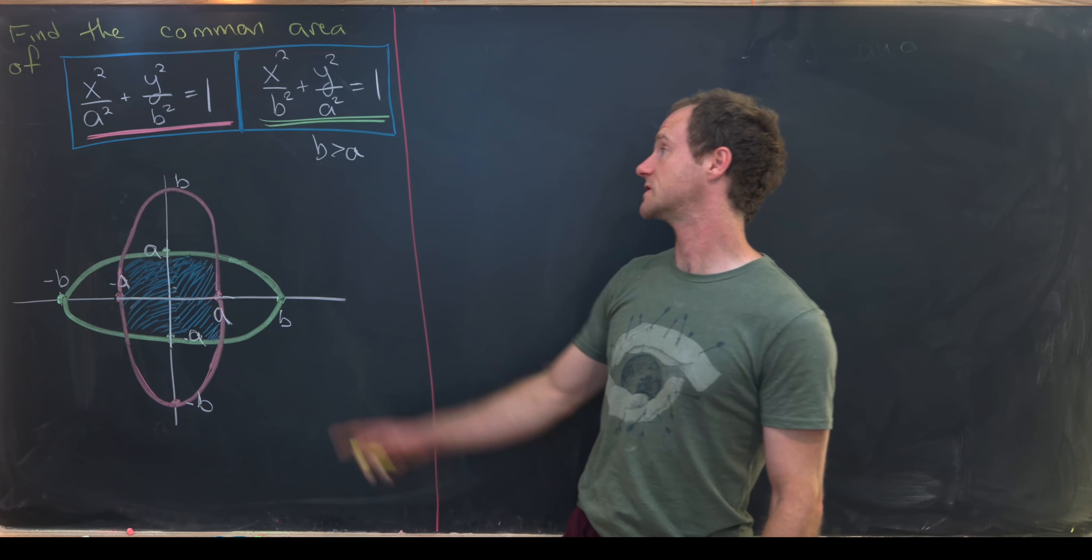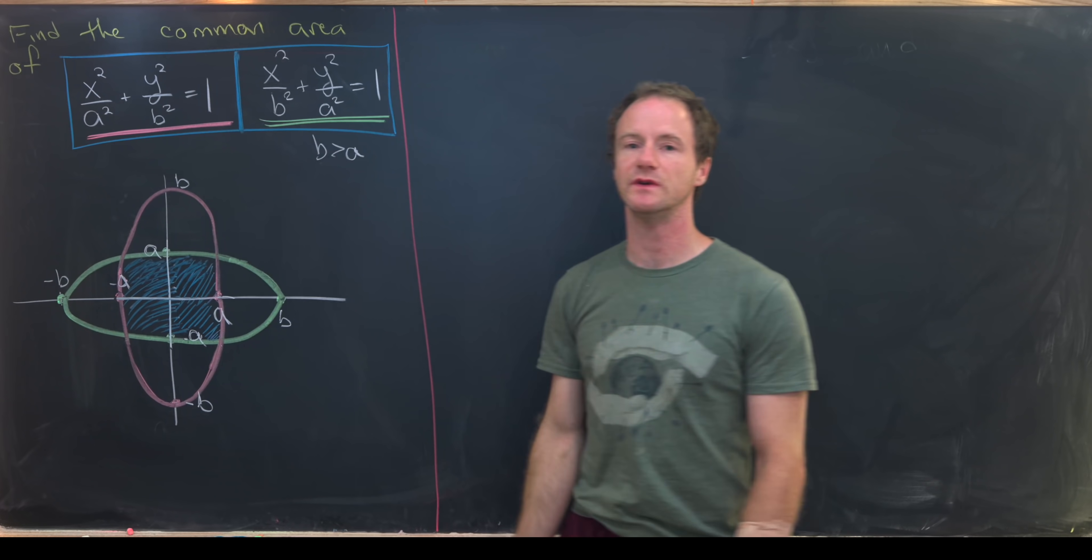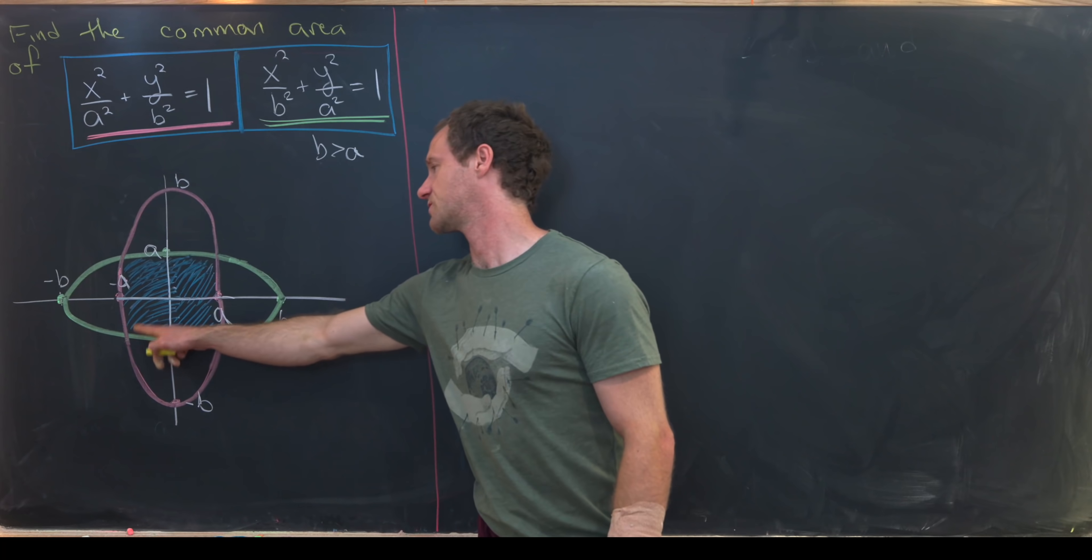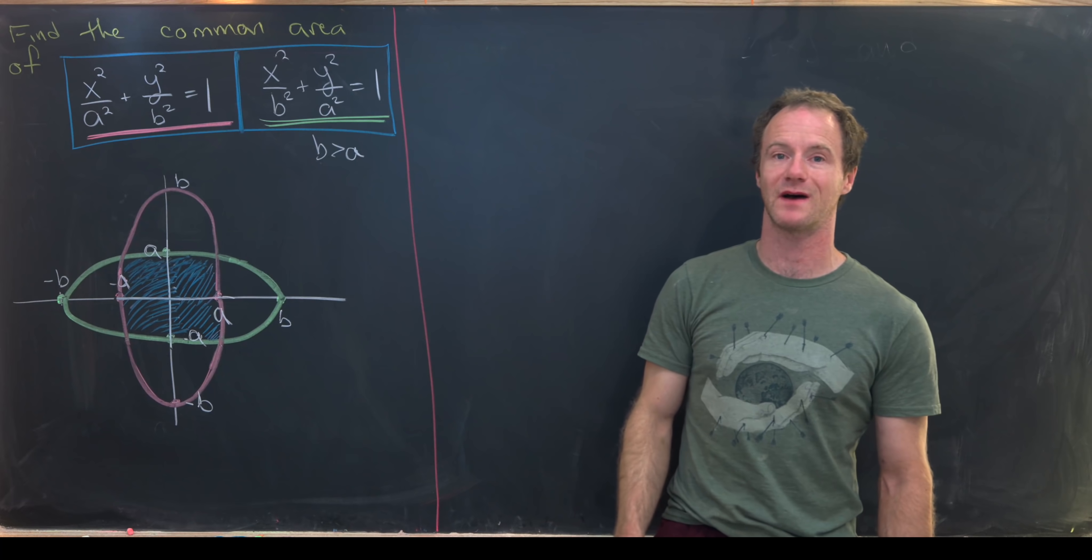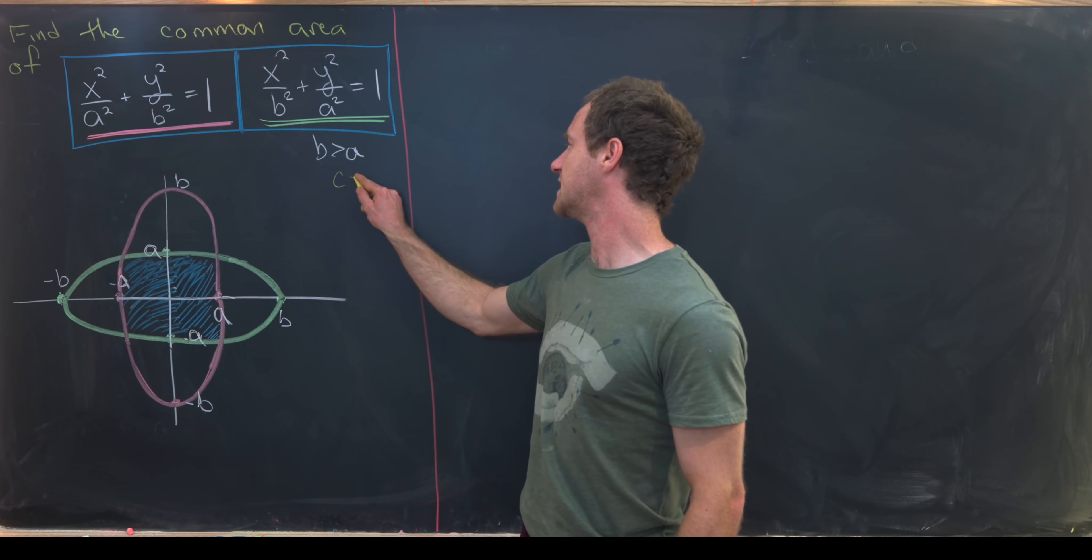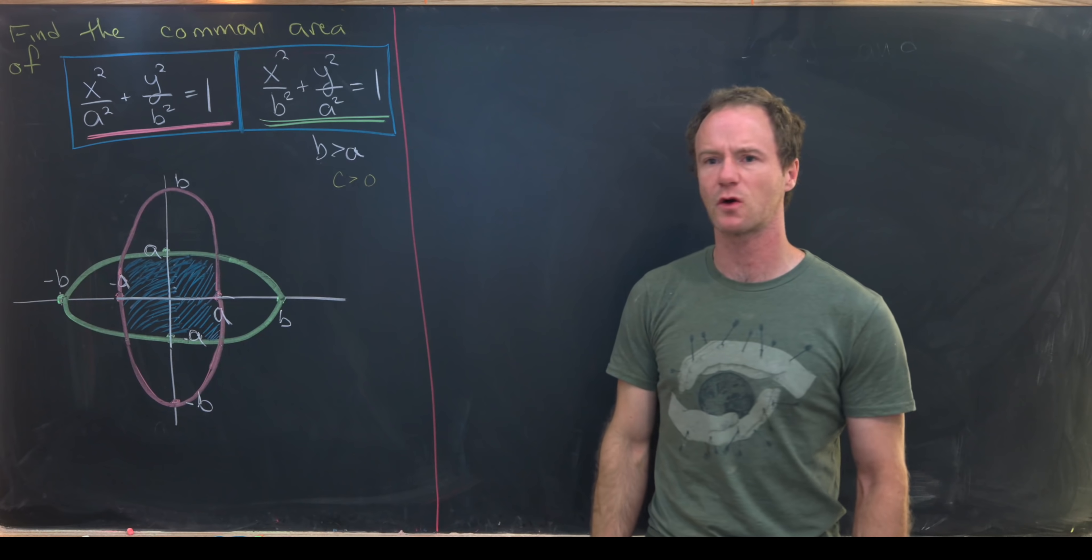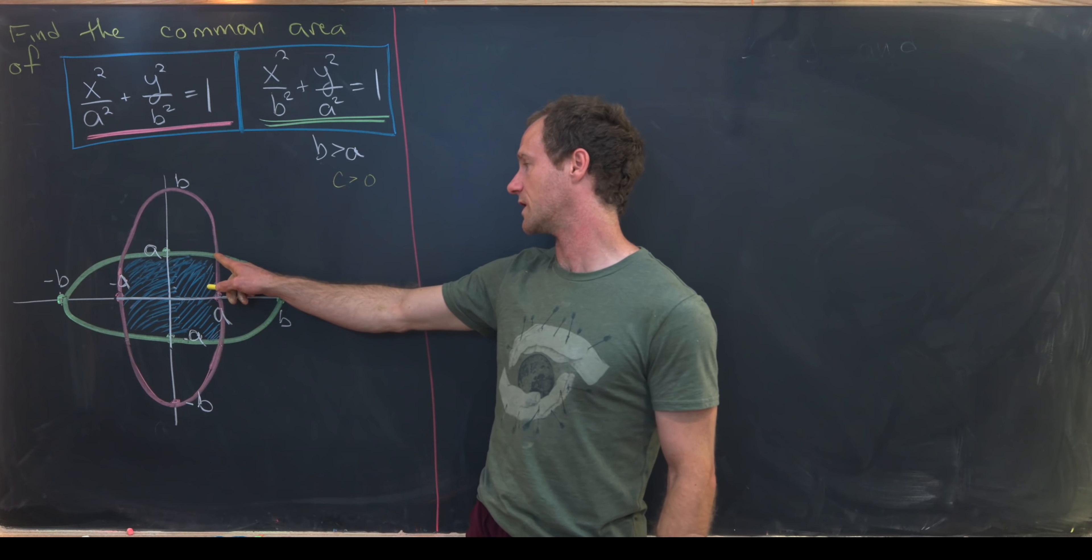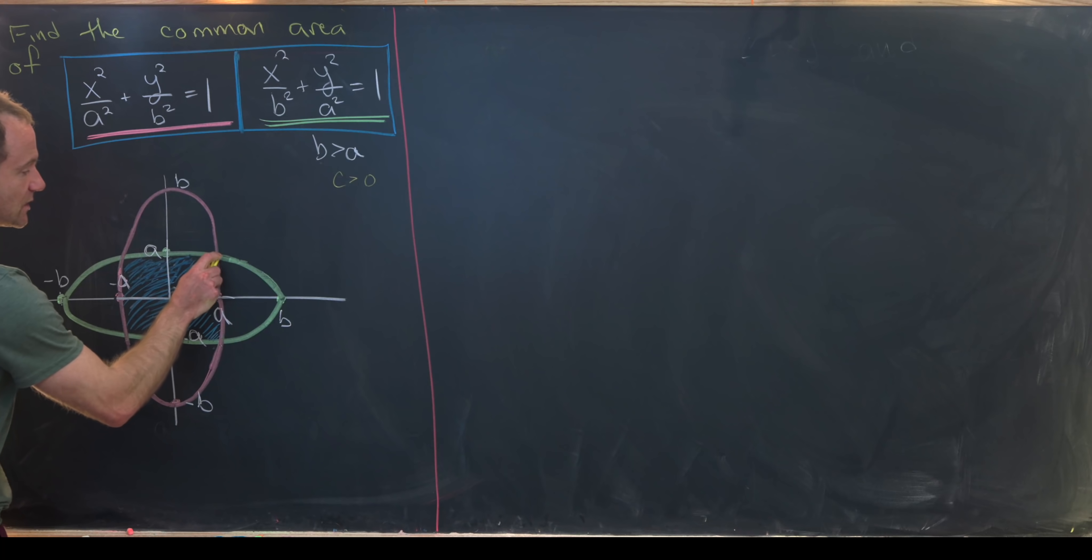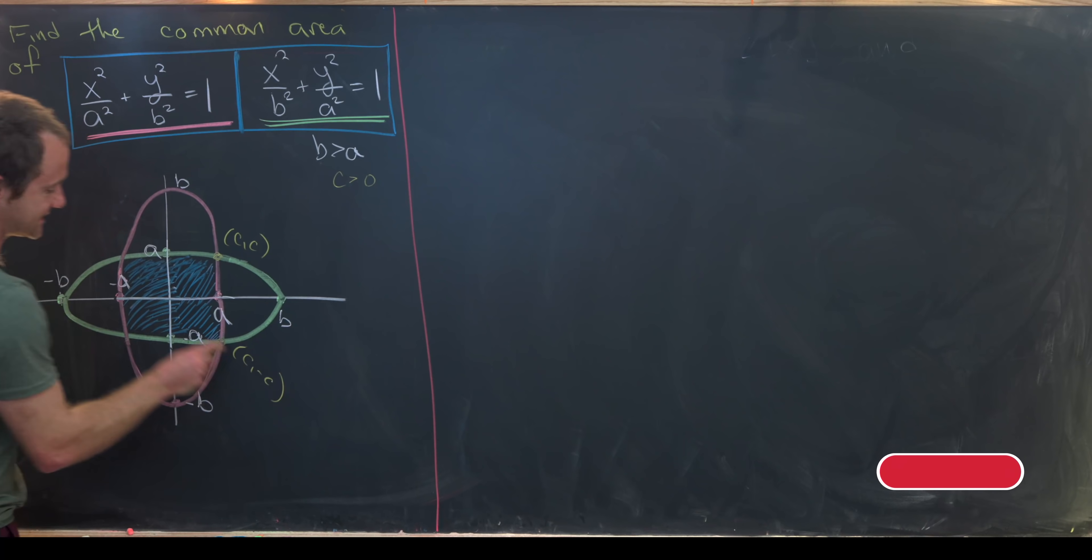I first want to notice by the symmetry built into these two equations, the y coordinate of these intersection points is equal to plus or minus the x coordinate. Let's suppose that c is bigger than zero and that corresponds to the x coordinate of these two intersection points. Then that means this one up here is of the form c comma c. This one down here is c comma minus c.